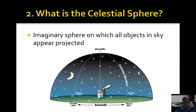What is the celestial sphere? The celestial sphere is an imaginary sphere that all objects in the sky appear projected. If you look outside, everything you see that goes around in every direction, that would be the celestial sphere, where we see stars projected onto this imaginary sphere.